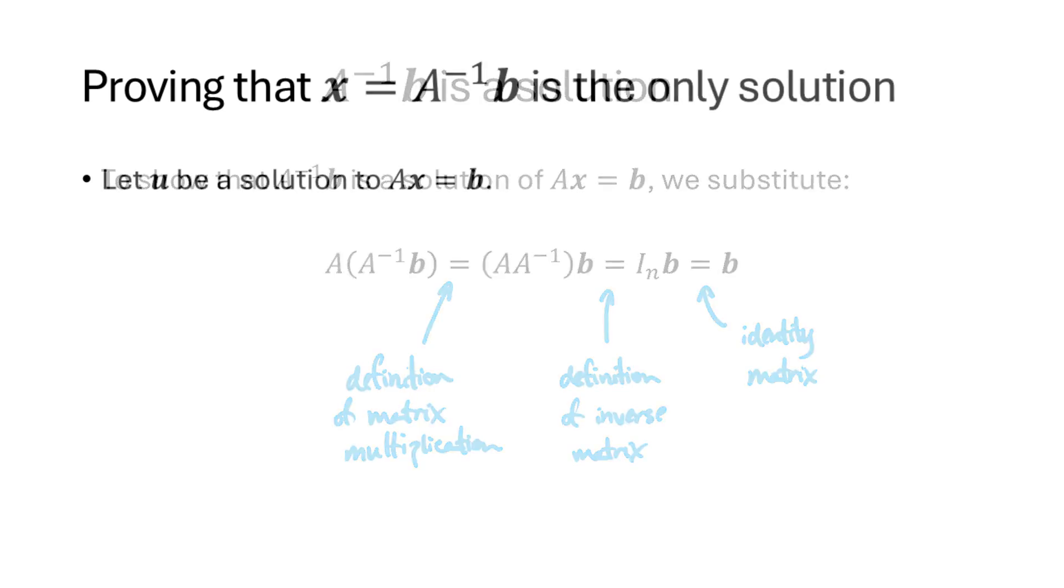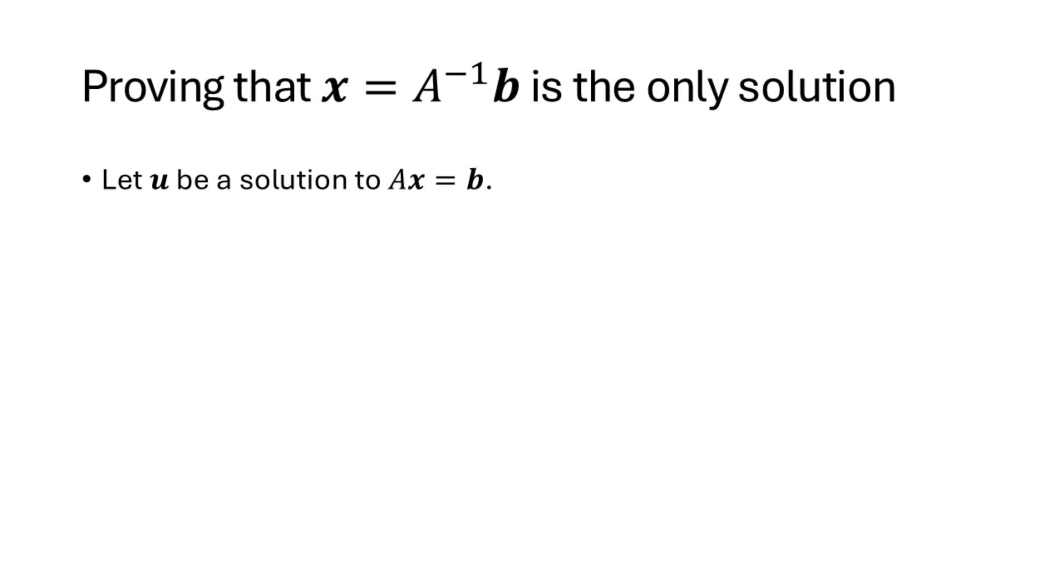Now why is it the only solution? Well let's say that we found a solution of the equation AX equals B. Maybe we found it by row reducing, maybe we just guessed and checked, but somehow we found a solution of AX equals B. Our goal is to show that that solution must in fact be the vector A inverse B.